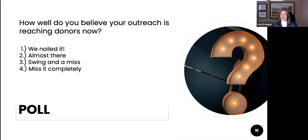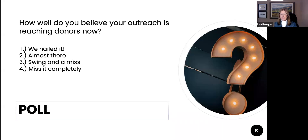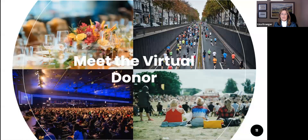What I love about our nonprofit sector is we are always so honest in our answers. Looking at the poll results — almost there, swing and a miss. If you're almost there or swing and a miss, it means you're trying and getting in front of them. It's tweaking maybe a little bit of that messaging — how to get them engaged before and after. It's encouraging to see. Let's meet this virtual donor.